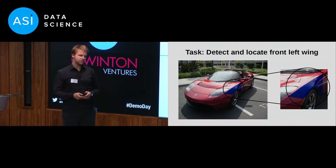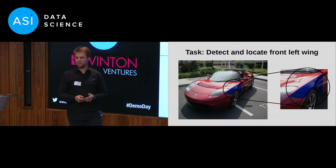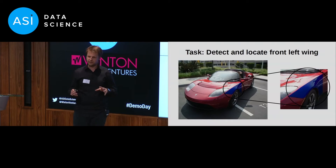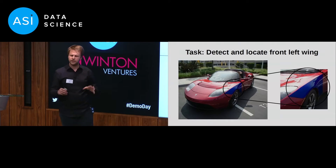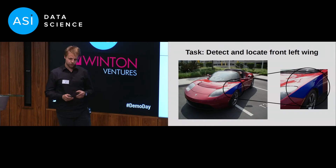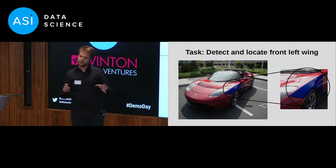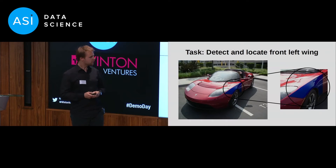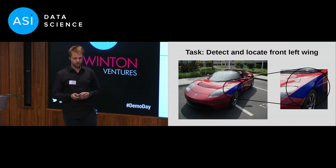So what techniques are we using? We're using a neural network based on an existing one that is already very good at detecting and classifying images into a thousand different categories. Unfortunately for us, none of these categories was front left wing of a car. So the network architecture has to be changed slightly and retrained. But after doing that, it gets very good at the task at hand.